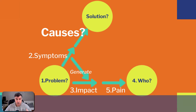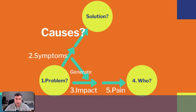If we want to summarize what we've seen already until now, we can see that we have the different steps of the problem. The question being: can I identify a real problem? The second step was to find what are the symptoms of this problem. These symptoms generate, in the third step, some impact to some users — which is the fourth step. And of course, we must identify who these users are, as they could be different types of populations.